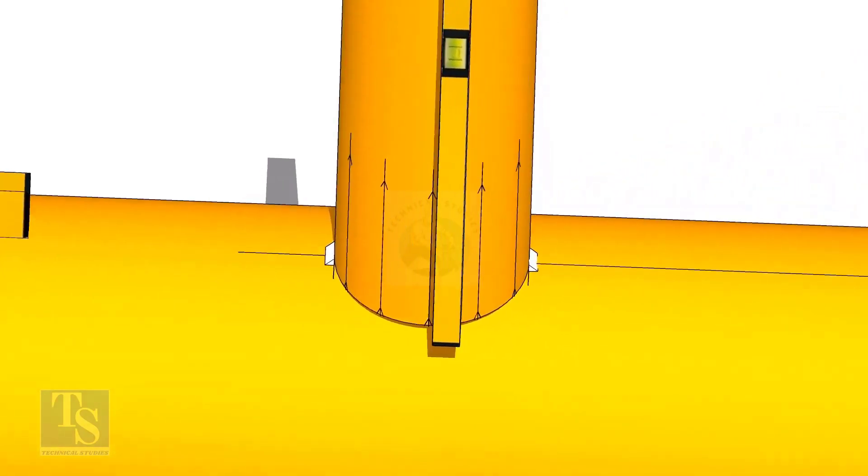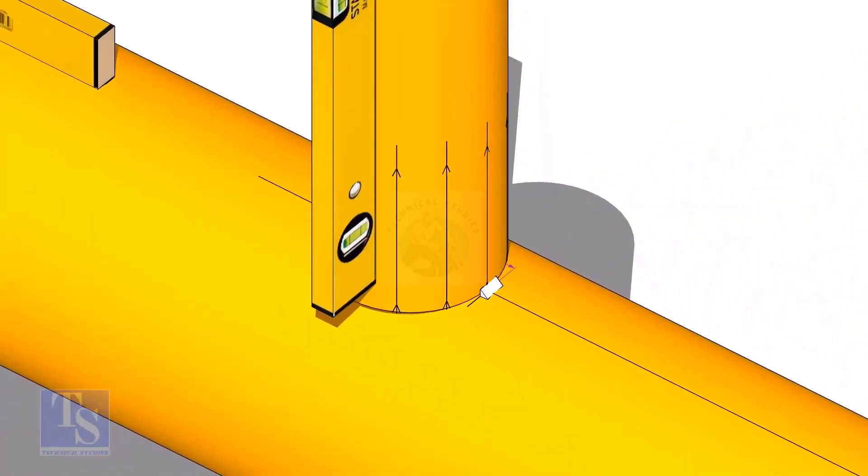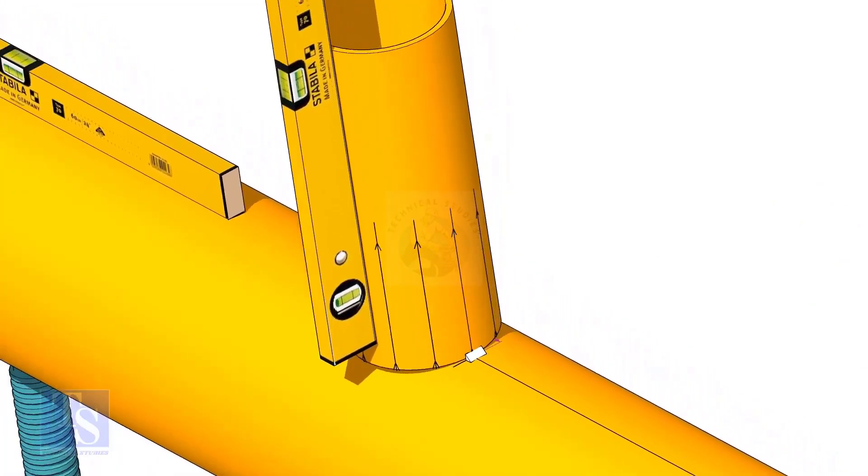Now make sure the pipe header and the branch are horizontally and vertically level. If required, strengthen the tack weld.